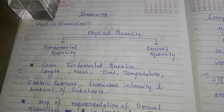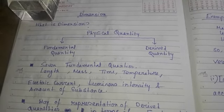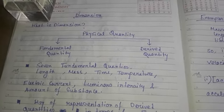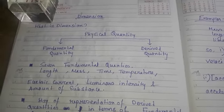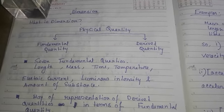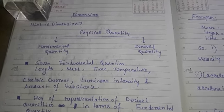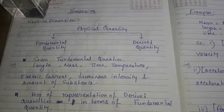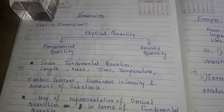As we know, a physical quantity is a quantity that we can actually measure. Physical quantities can be categorized into two main sections: one is fundamental quantity and the other is derived quantity. Fundamental quantities are those physical quantities that are independent — no other quantity is needed to find them. As we know, there are seven fundamental quantities.